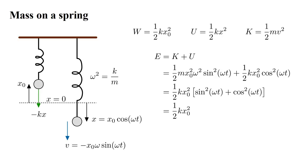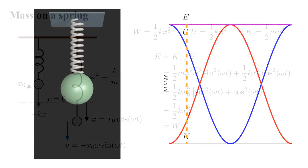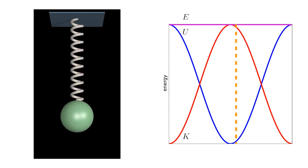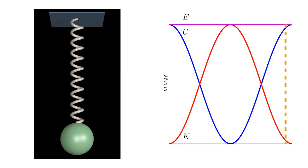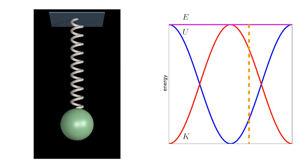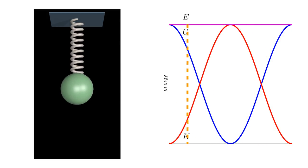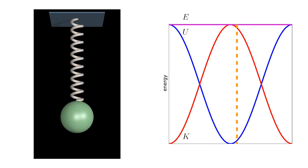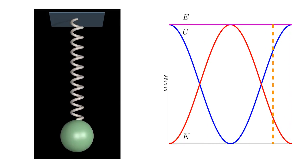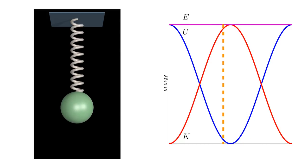So indeed, the total energy is constant, and equal to one-half k x₀², which equals the work we did to put the system in its initial state. As the mass oscillates, there are times when potential energy decreases and kinetic energy increases, and times when kinetic energy decreases and potential energy increases. But at all times their sum, the total energy, remains constant.